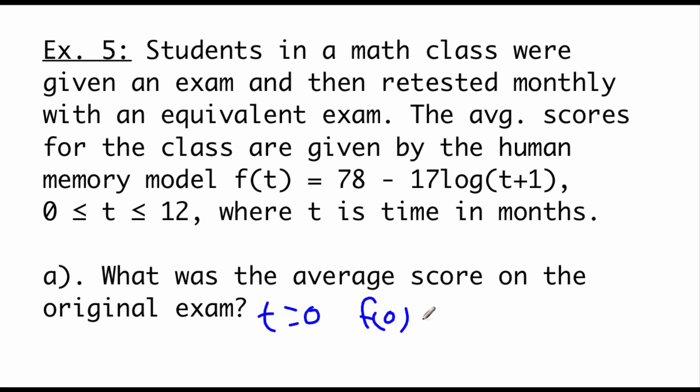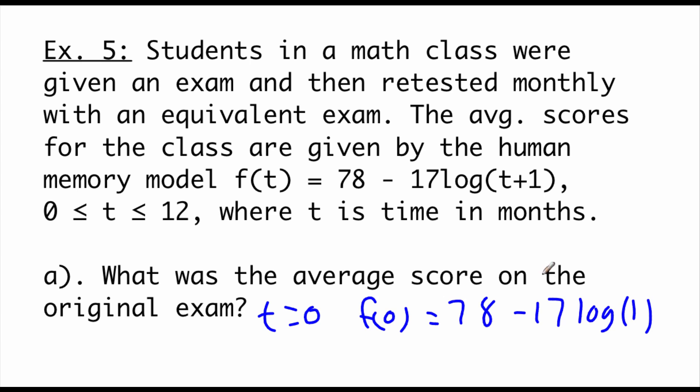f of 0 is equal to 78 minus 17 times the log of, well, in here we'd have 0 plus 1, which is 1. Now remember, if we take the log of 1, that's just 0. So this is 78 minus 17 times 0. So that's just going to be 78. So the average score the first time the test was given was a 78.